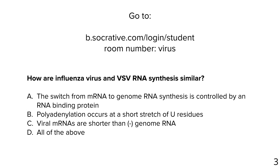Our last question: how are influenza virus and VSV RNA synthesis similar? The answer is all of the above. The switch from mRNA to genome RNA synthesis is controlled by an RNA-binding protein — the nuclear protein. Polyadenylation occurs at a short stretch of U residues. And viral mRNAs are shorter than the minus-strand genome RNA for both flu and VSV.